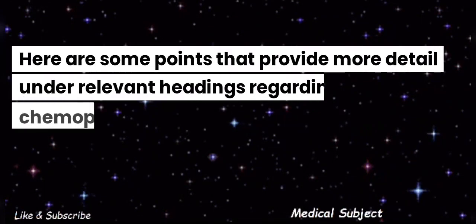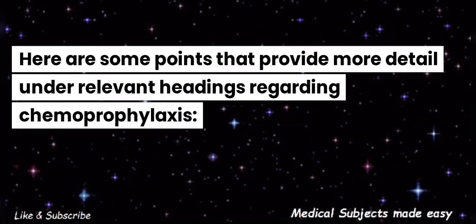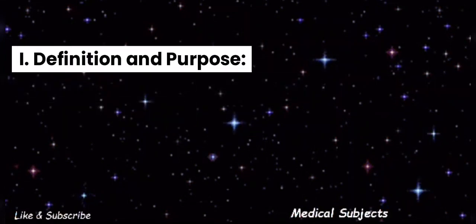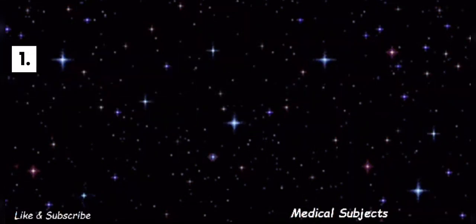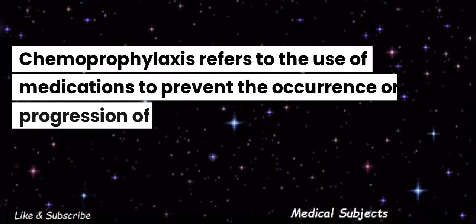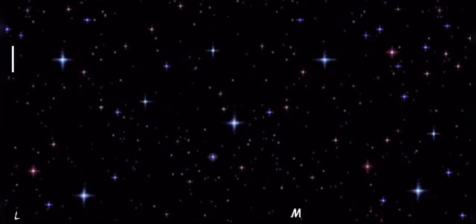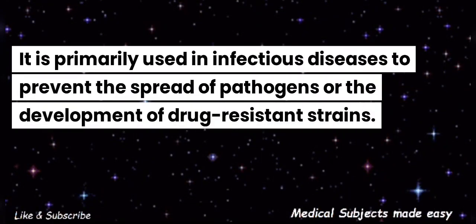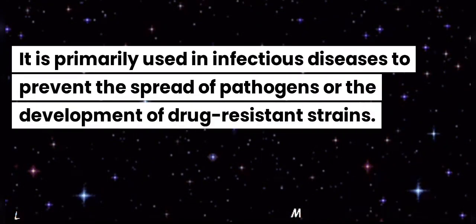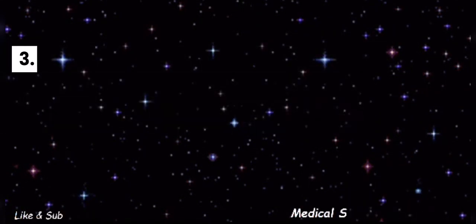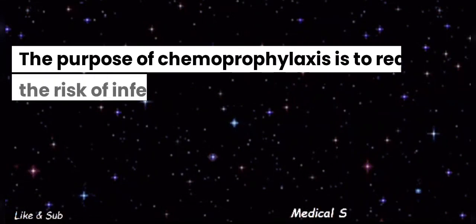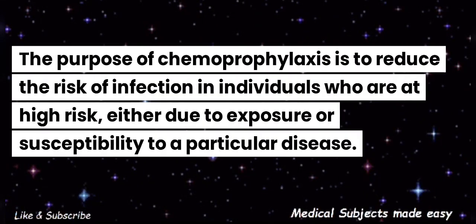Here are some points that provide more detail under relevant headings regarding chemoprophylaxis. Definition and Purpose: Chemoprophylaxis refers to the use of medications to prevent the occurrence or progression of a disease. It is primarily used in infectious diseases to prevent the spread of pathogens or the development of drug-resistant strains. The purpose of chemoprophylaxis is to reduce the risk of infection in individuals who are at high risk, either due to exposure or susceptibility to a particular disease.